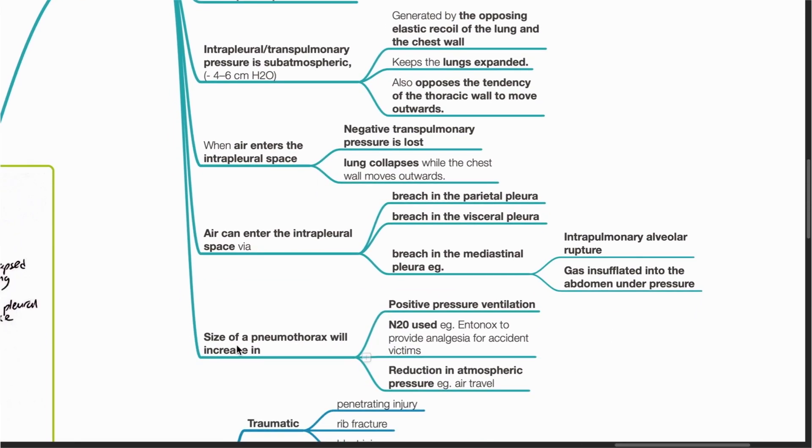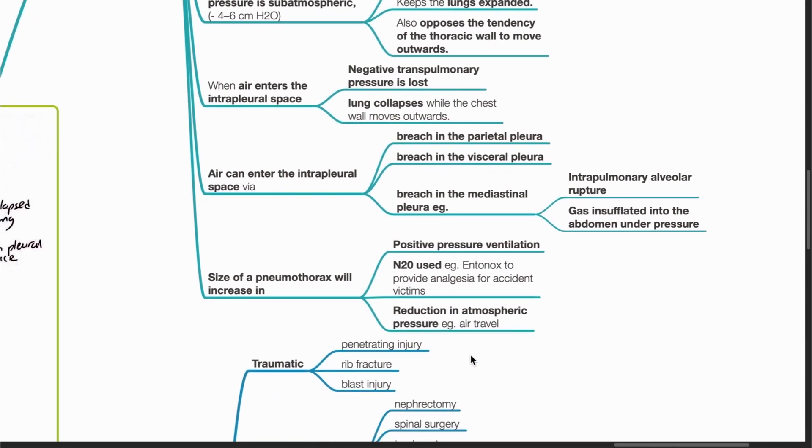Size of a pneumothorax will increase in positive pressure ventilation, usage of nitrous oxide, or reduction in atmospheric pressure, for example during air travel.